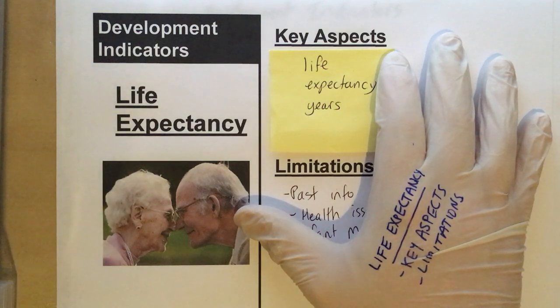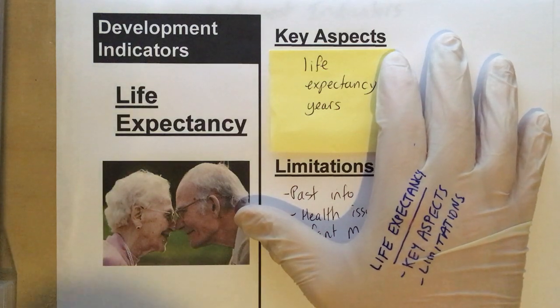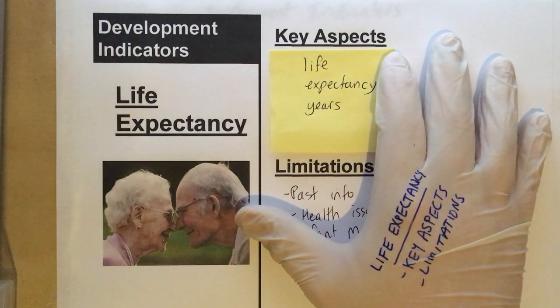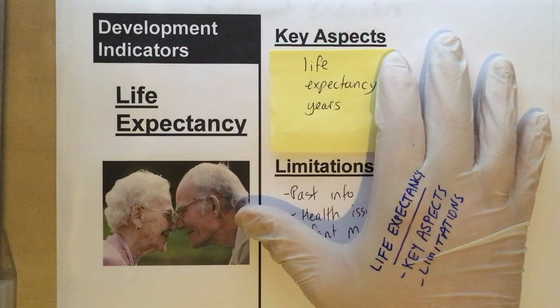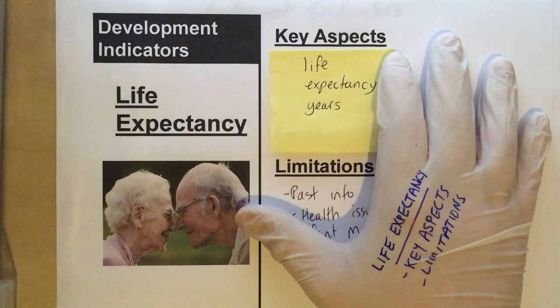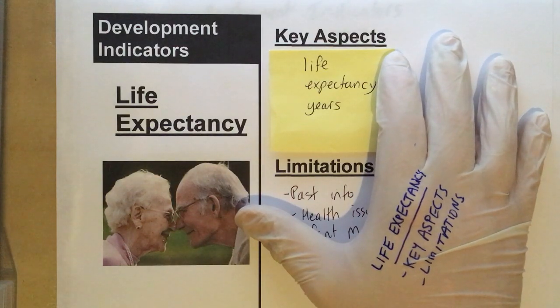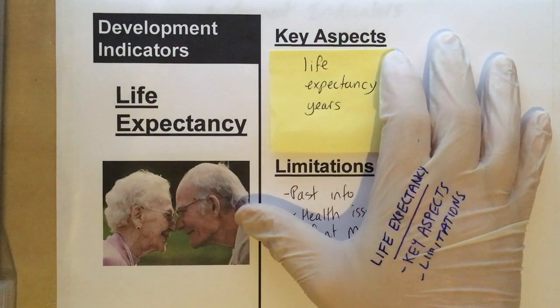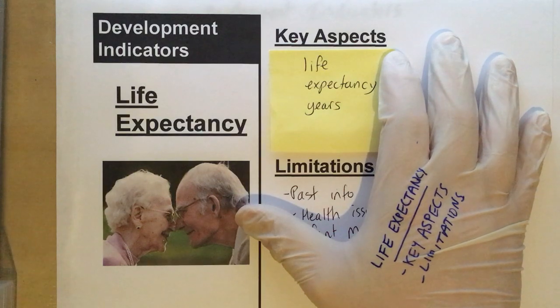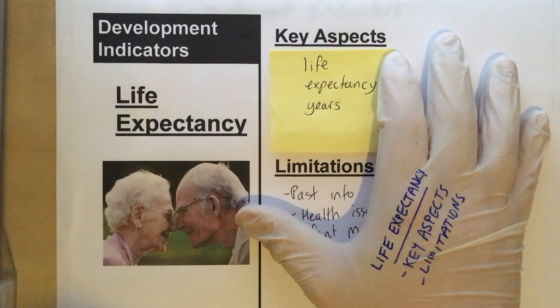Hi, welcome to this episode of White Glove Geography. Today we're going to look at development indicators, and in particular we're going to look at life expectancy — the key aspects and also the limitations of this particular indicator.